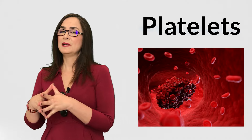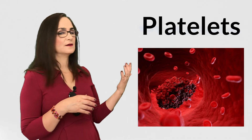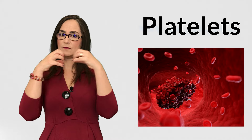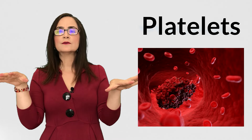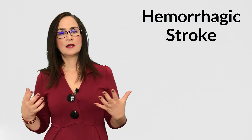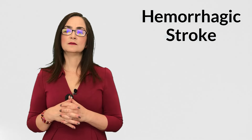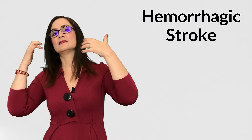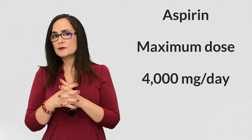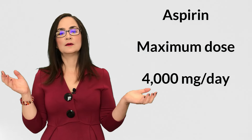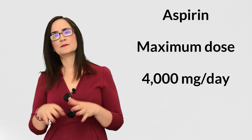Aspirin has an effect on platelets, the blood cells responsible for blood clots. Aspirin blocks platelets from forming blood clots, so low-dose aspirin can also be used to reduce the risk of stroke and heart attacks. However, in people with high risk of hemorrhage and bleeding, aspirin is not a good idea because there is an increased risk of bleeding, like hemorrhagic stroke. The maximum dose of aspirin per day is 4,000 mg — up to 2 tablets of 500 mg four times a day.